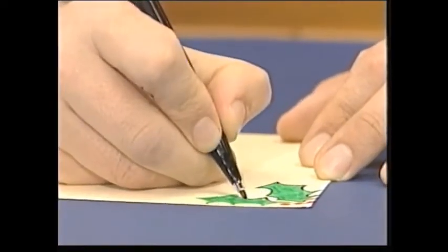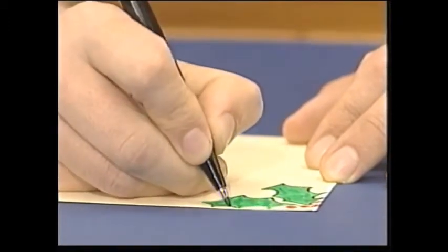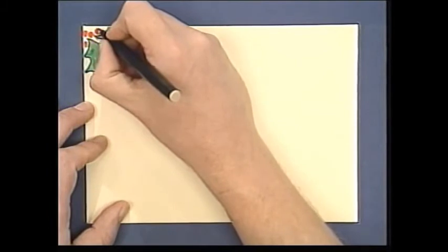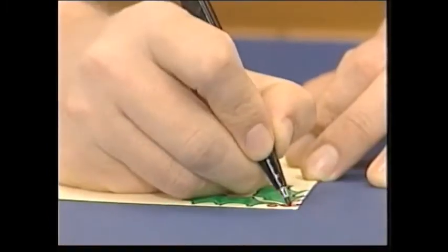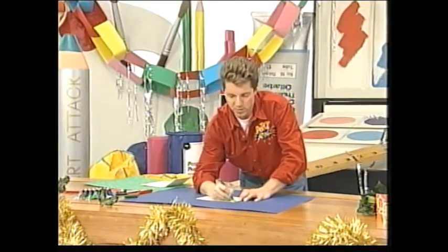then it makes it look even spikier. And I don't know whether you've ever held holly, but it can be quite unpleasant. So when you do see it at Christmas, steer clear of it, because it's half sharp. I'm just going to go around those berries, black outline, and put a line down the middle of the leaves. And there it is.